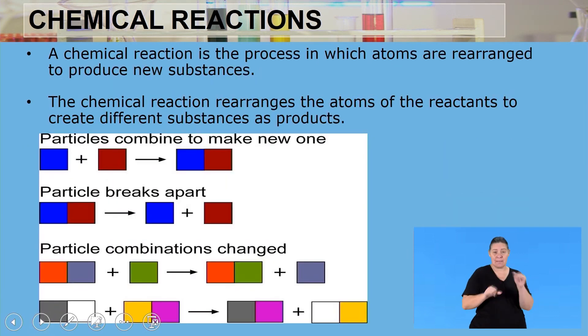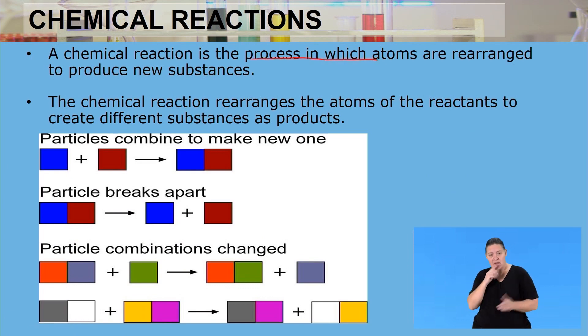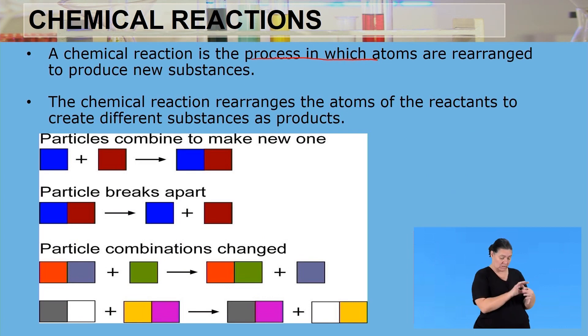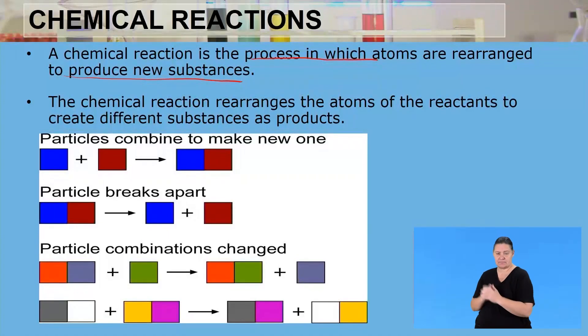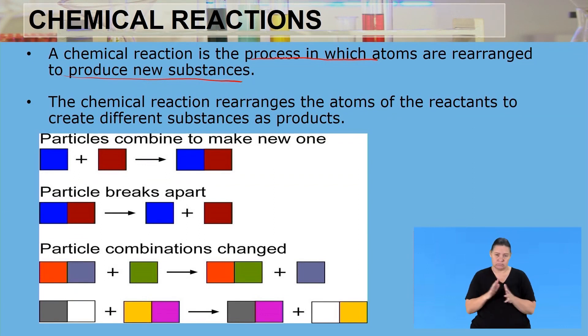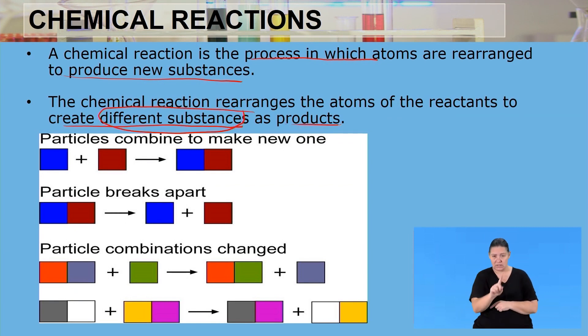A chemical reaction is the process in which atoms are rearranged. We break the existing bonds and rearrange the atoms that were present at the beginning of the reaction to produce new substances. The chemical reaction rearranges the atoms of the reactants to create different substances, and those different substances are known as the products.